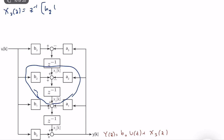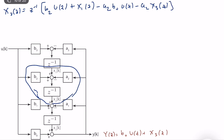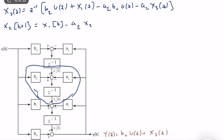So x2 of z is equal to z to the power of minus 1 times the summation of signals: b2 u of z plus x1 of z minus a2 y of z. Substituting y of z, this becomes minus a2*b0 u of z minus a2 x3 of z. So the difference equation gives us x2(k+1) is equal to x1(k) minus a2 x3(k) plus (b2 minus b0*a2) u(k). Now we have computed our second equation.